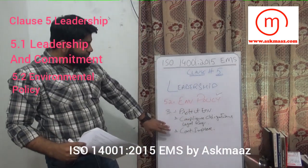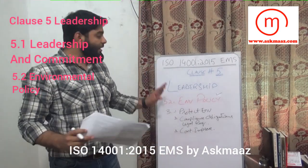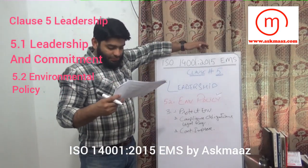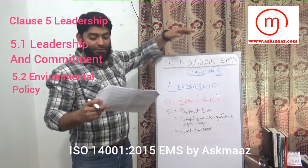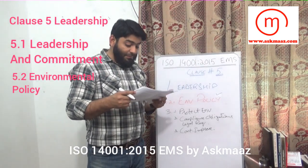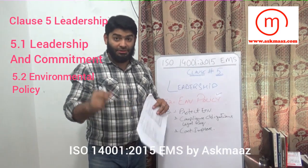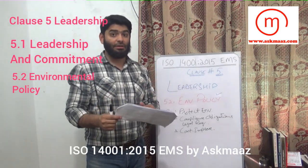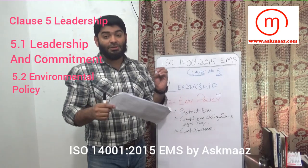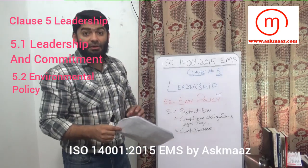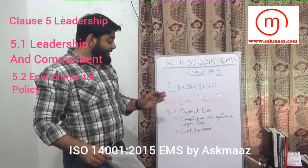Number 3: continually improve. So these are the three things your environmental policy shall show. The environmental policy shall be maintained as documented information — properly maintained, communicated within the organization, and made available to interested parties outside the organization.